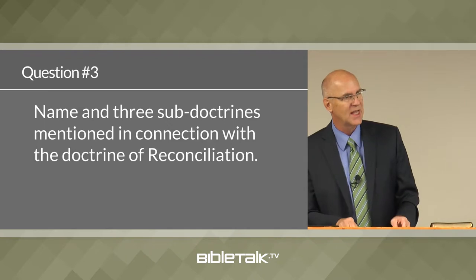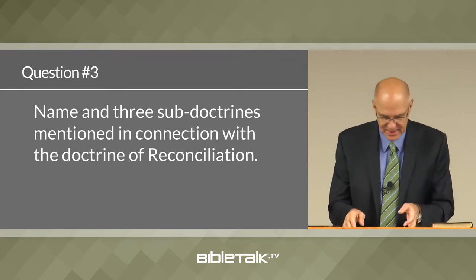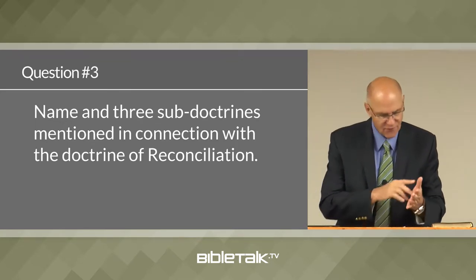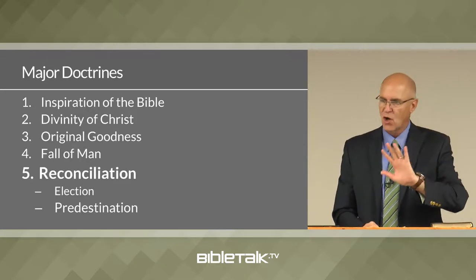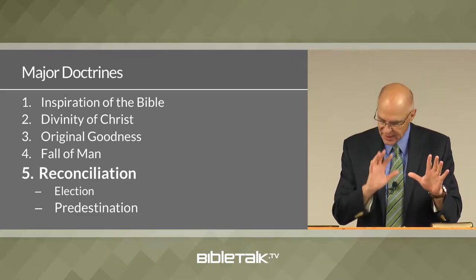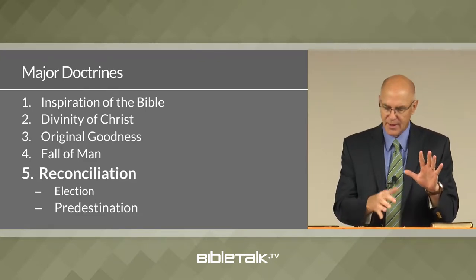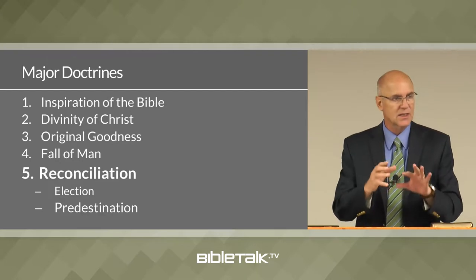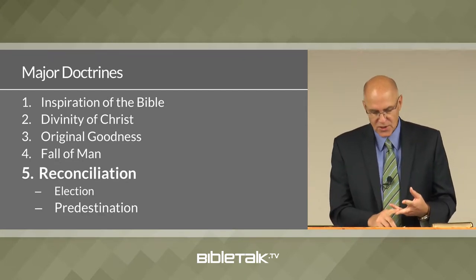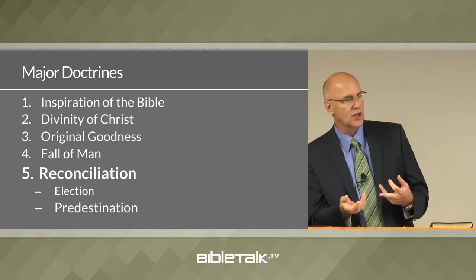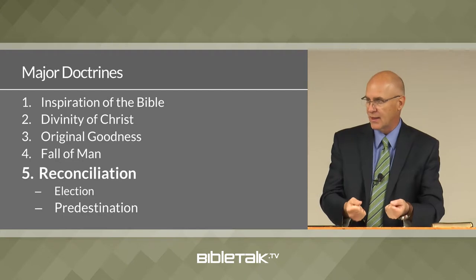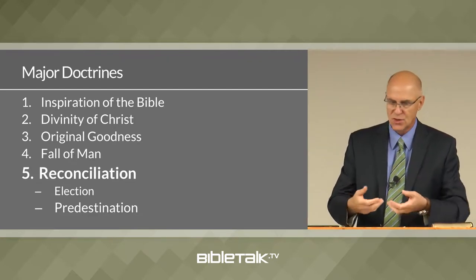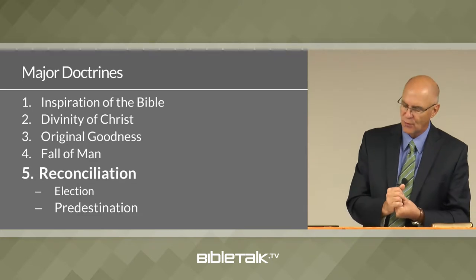Total up your own score. Now let's review the five major doctrines we've talked about so far. First: inspiration of the Bible — the entire Bible inspired by God. Second: the divinity of Christ — Jesus Christ is the divine Son of God. Third: the doctrine of original goodness — God created man good, with the ability to obey and manage the creation.